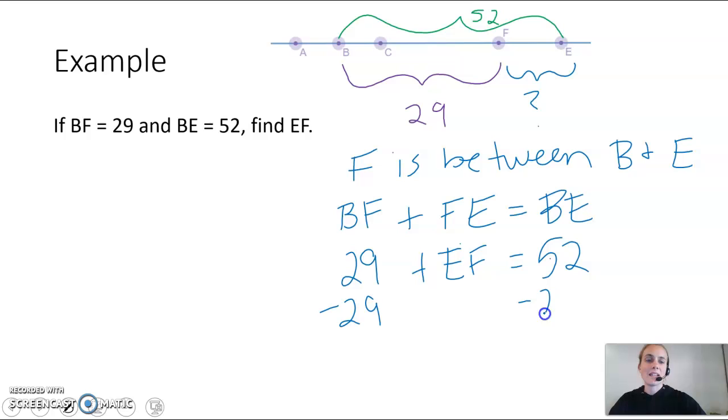And you might not necessarily set up an equation like this to solve, but as long as you show in some way your work that you're going to take 52 minus 29 to get your answer, that's what matters. I wouldn't want to just see your answer, and that's it. I'd want to see you took 52 minus 29 to find out that EF is equal to 23. And if we had units with that, we would include the units.